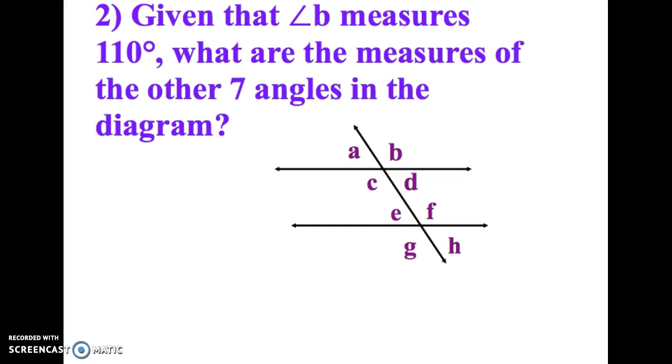Okay, the last thing you'll have to learn is a lot of times you're asked to identify angle measures. And given that angle B measures 110 degrees, what are the measures of the other seven angles in the diagram? Here's some interesting properties. So first thing I want to write 110 on B.